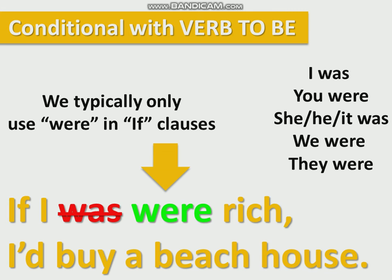Conditional with verb 'to be' — and this applies to zero, first, or second conditional. We typically only use 'were' in if clauses. Here is the conjugation of the verb to be in the past: I was, you were, she/he/it was, we were, they were — which is 'era' and 'estava' in Portuguese. Typically we say 'I was rich,' but in the conditional, in the if clauses, we always use 'were'. So: if I were rich, if you were rich, if she were rich, if he were rich, if it were rich, if we were rich, if they were rich. In conditional sentences with 'if', we don't use 'was' — we use 'were' with the verb to be.